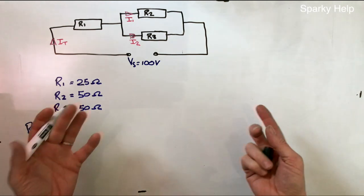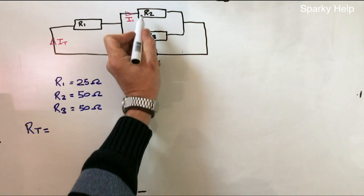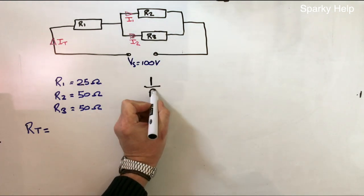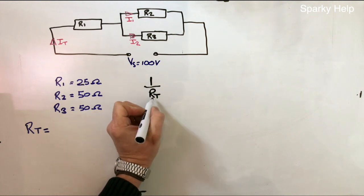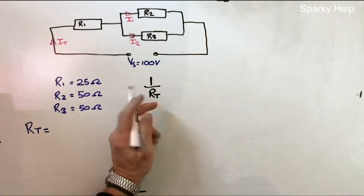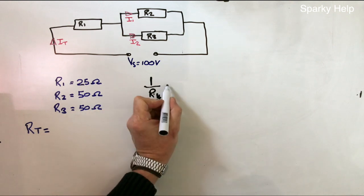First step is to work out just the parallel part. Ignore that part and just work out these two. So, for Calculate Parallel, the resistance total of this bit here, we'll call RT, but actually, because it's part of a series parallel, we'll call it R4.